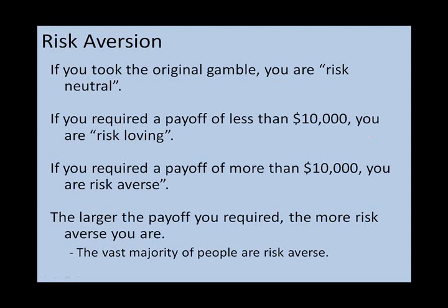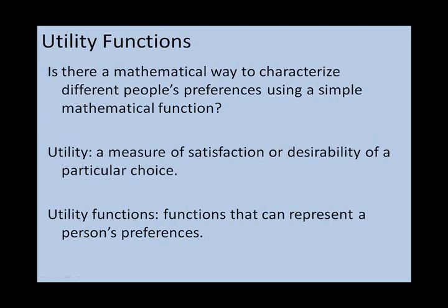And the larger the payoff you required, the more risk averse you are. Now, what we'll see in class is that, while for small gambles, some people maybe even risk loving, for large gambles, with say $10,000 or $100,000, the vast majority of people are risk averse. It's useful to know that different people have different levels of risk aversion. Suppose you're a financial manager, managing lots of different people's money. You know they have different levels of risk aversion, and so they're likely to want to invest in different products. The problem is, how do you know exactly what each person is going to want to invest in, unless you talk to them all the time and ask them about every single option possible? You can't do that, in reality. It's going to take up hours of your time and your customer's time. We want to know whether there's a mathematical way to characterise different people's preferences using some simple mathematical formula.